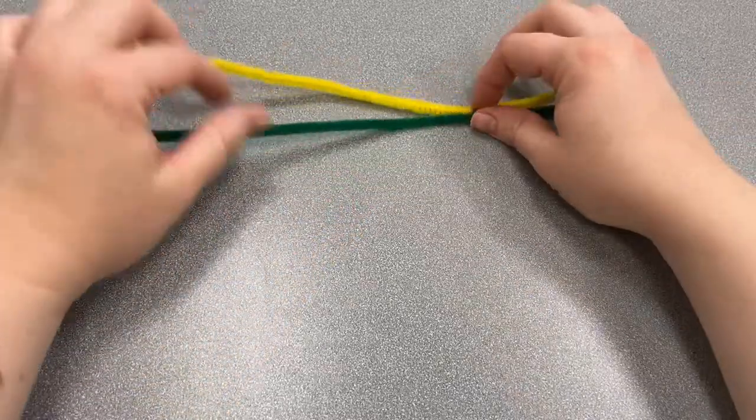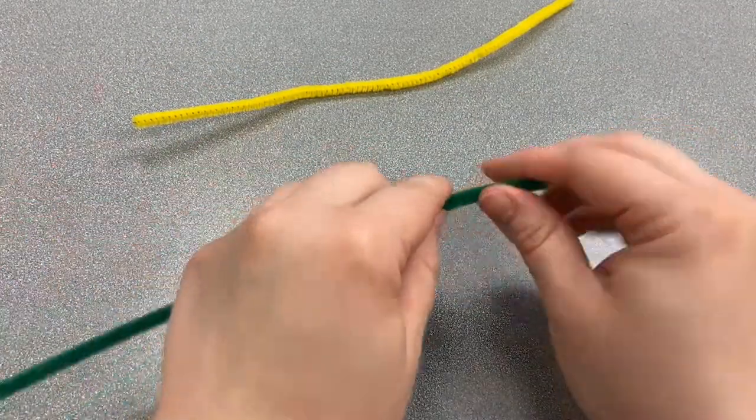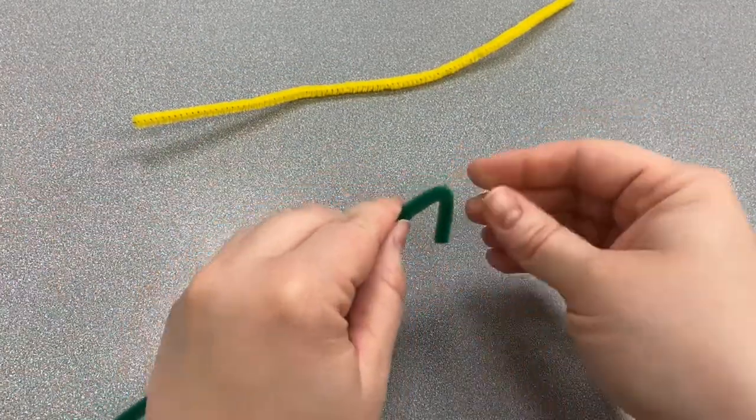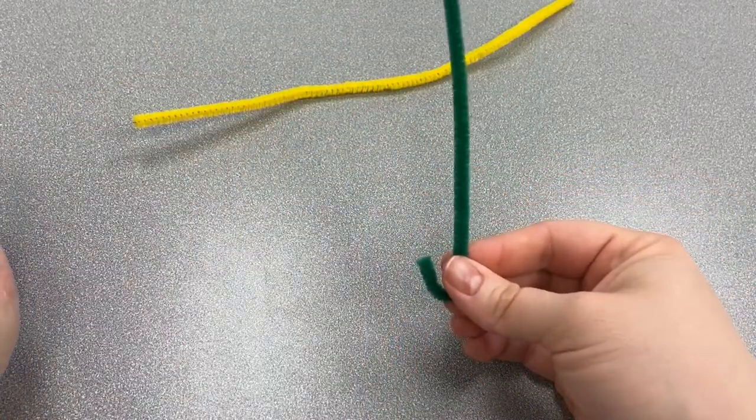Now we're going to make the stem for our flower out of the pipe cleaners. Take the green pipe cleaner and make a little hook at the end so that it kind of looks like a giant letter J.